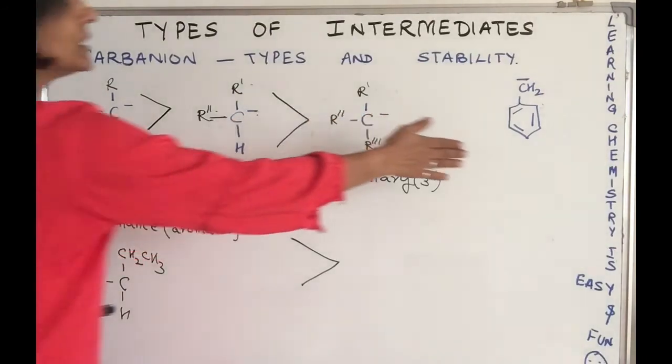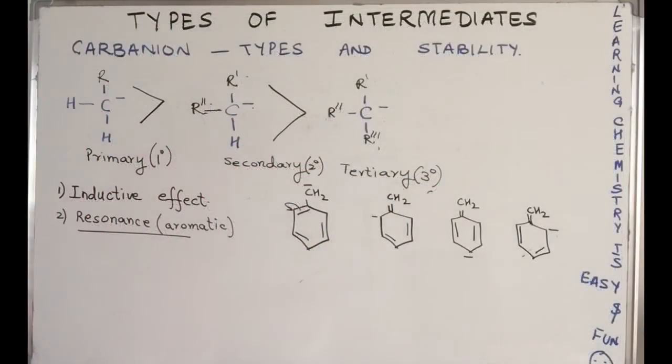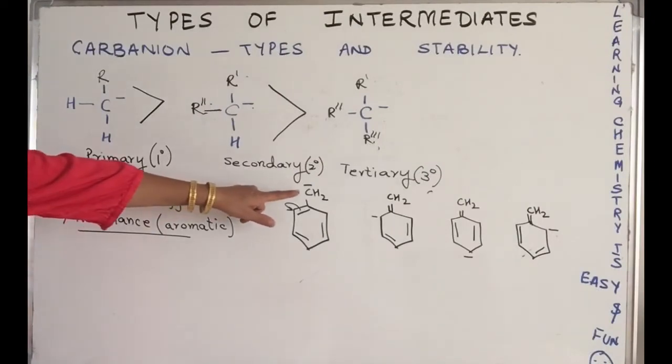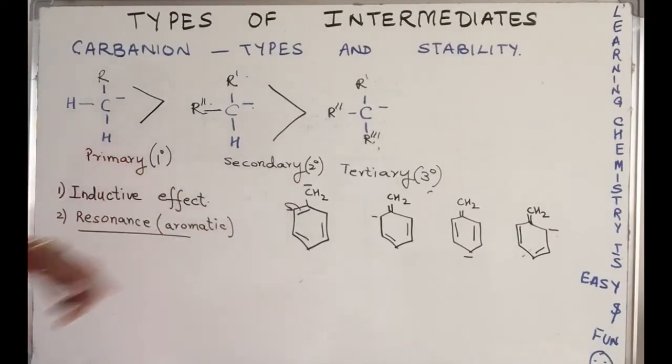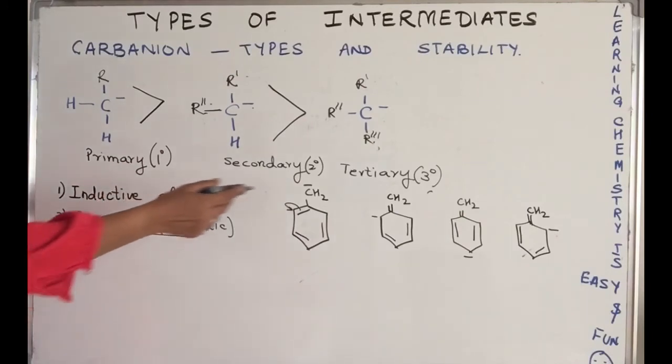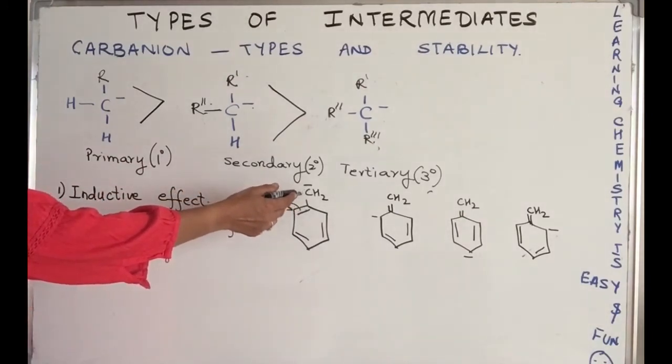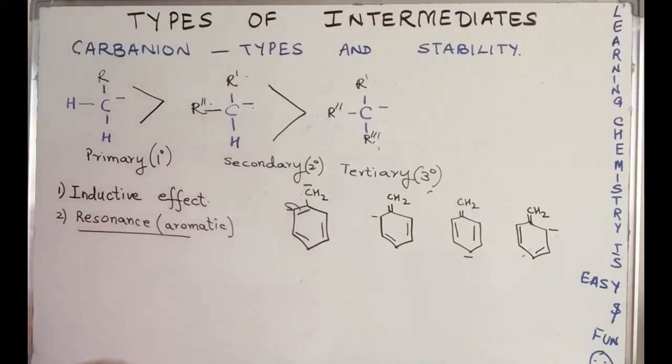We come to the benzylic carbon anion, wherein there is a negative charge on the chain, on the carbon which is attached as a side chain to the benzene ring. I have drawn it for greater clarity. This carbon is negatively charged.